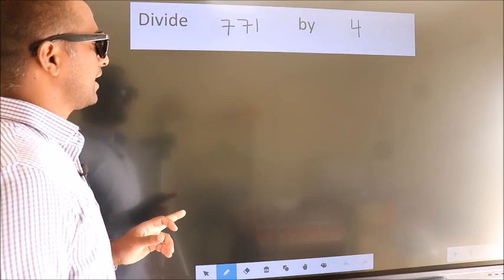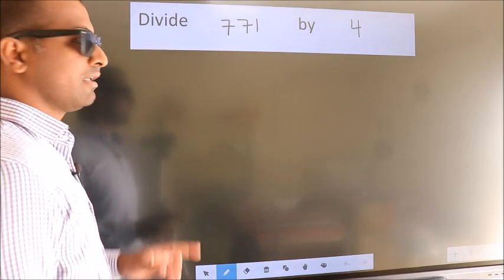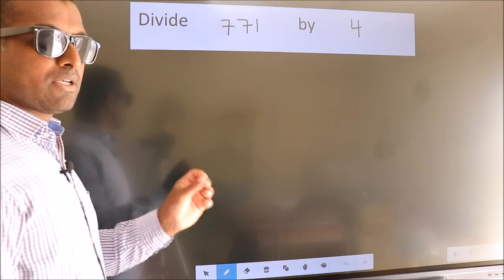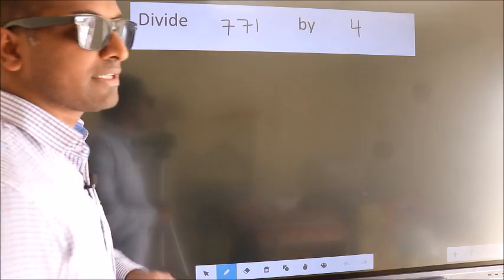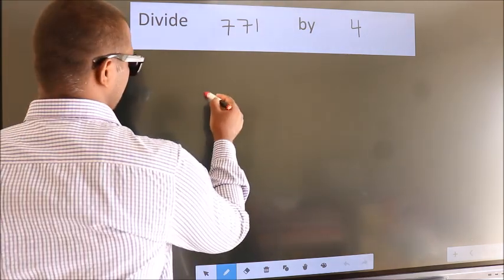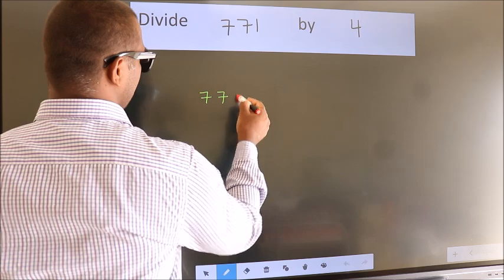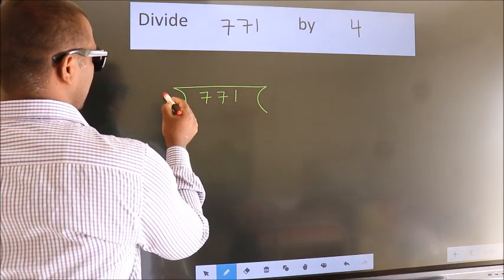Divide 771 by 4. To do this division, we should frame it in this way: 771 here, 4 here.